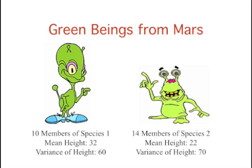Now let's look at an application of this formula. Assume there are two species of green beings on Mars. The mean height of species 1 is 32, while the mean height of species 2 is 22. The variances of the heights of the two species are 60 and 70 respectively, and the heights of both species are normally distributed. You randomly sample 10 members of species 1 and 14 members of species 2. What is the probability that the mean of the 10 members of species 1 will exceed the mean of the 14 members of species 2 by 5 or more?